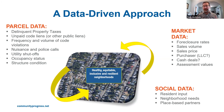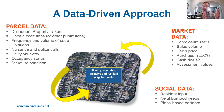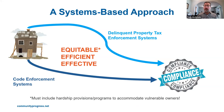The third bucket of data — and the most important — is social data. What that means is really centering residents who are most impacted by vacancy and abandonment, not just in the design of solutions, but also in implementation.